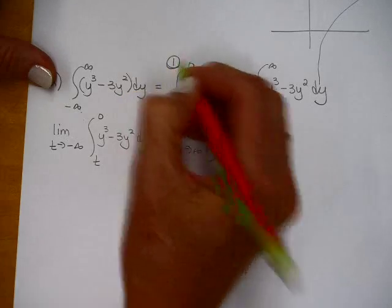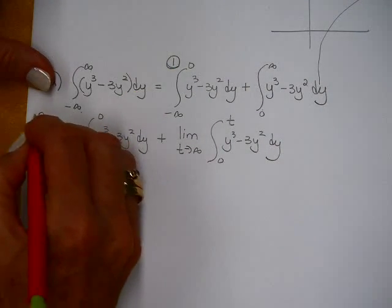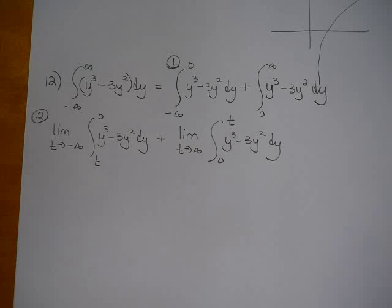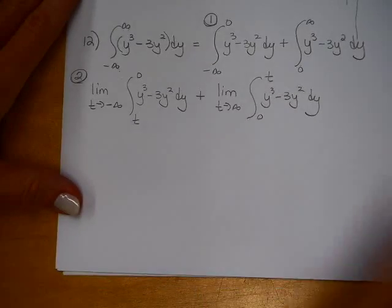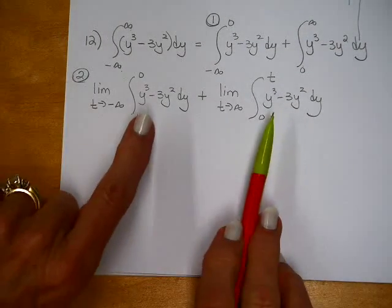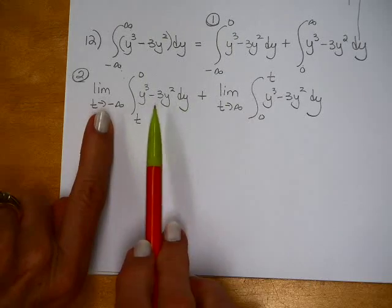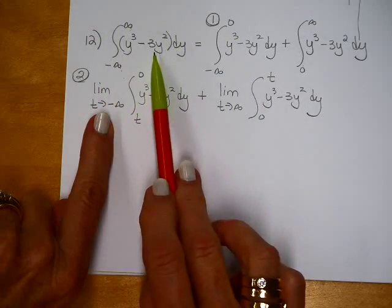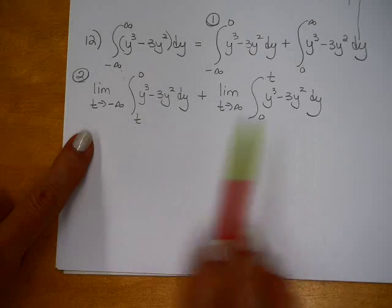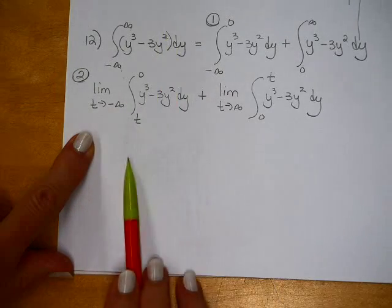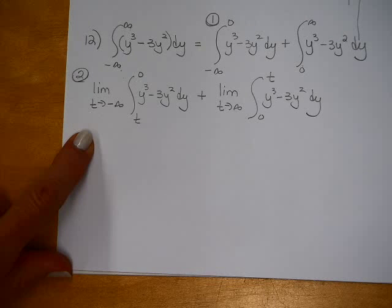Step one is to split it at some point. Step two is to write these as limits. If you don't go through these steps on your test, I will count it wrong. Both of these have to converge for the whole thing to converge. If one of these diverges, the whole thing diverges. So you can pick one and work it — if it diverges, you're done. But if it converges, you've got to work the other one too.